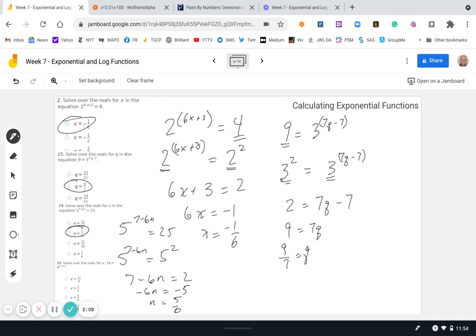Okay, and last but not least, we'll look at this one: 16 equals 4 to the 5 minus 4x. And I think you get the hang of it now. We set 16 equal to 4 squared. And now we have 4 to the 5 minus 4x, which we can set the exponents equal to each other. So 2 equals 5 minus 4x.